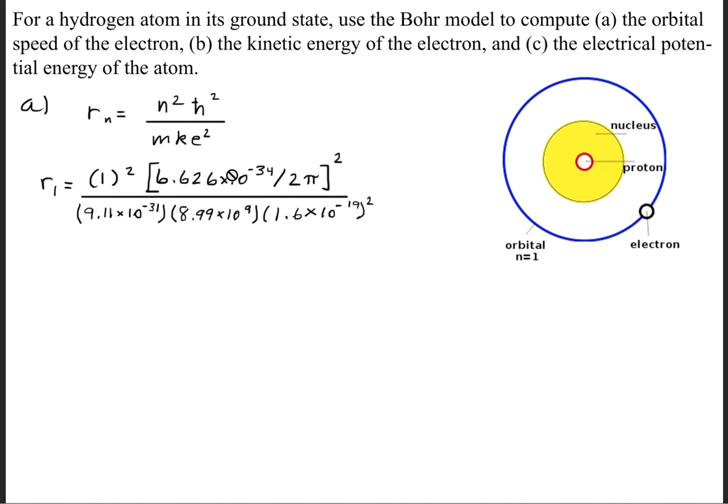The energy level for n, as you can see here, there's only one orbital right here. Or we could say there's only one ring around the nucleus. So n is going to equal 1. The mass of an electron is 9.11 times 10 to the negative 31st kilograms.